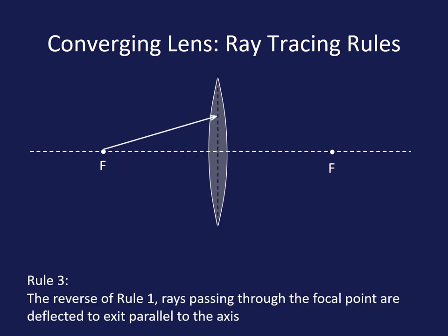And our third rule is light that travels from the focal point hits our lens and will be bent parallel to a principal axis.